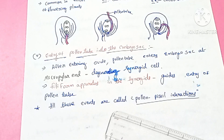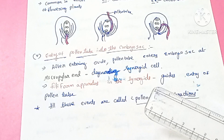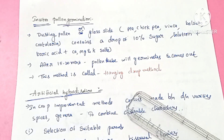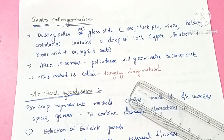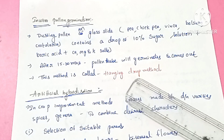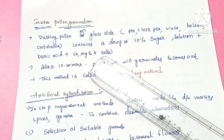The next concept is in-vitro pollen germination. Normal germination occurs on the stigma under living conditions, but if germination occurs in a non-living condition in the laboratory, it is called in-vitro pollen germination. For this experiment, we prepare a solution of 10% sugar solution to which boric acid and salts of calcium, magnesium, and potassium are added.